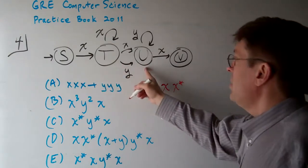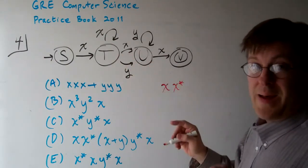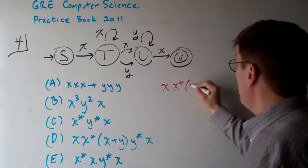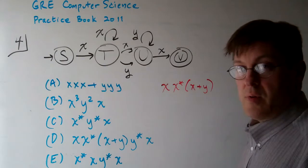Now to go to U, we can go either the X path or the Y path. X or Y. What's that? X plus Y is the notation for a regular expression.